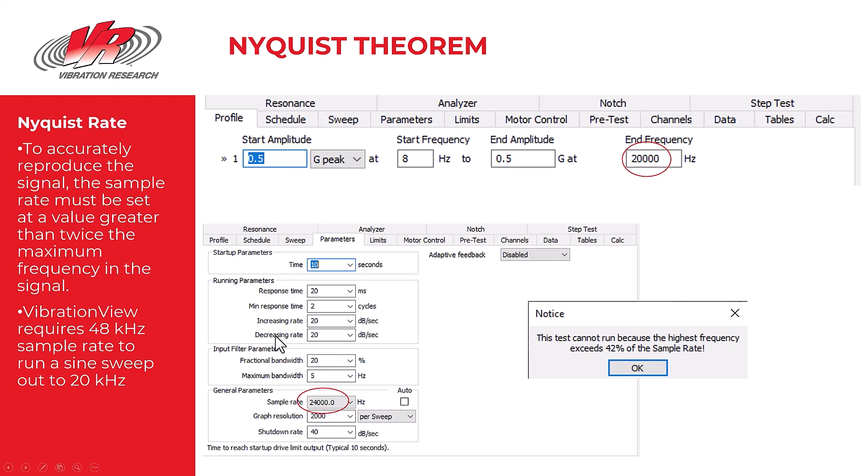I tried on the VibrationView software to pick a number lower than 40,000 samples. I picked 24,000 and this error popped up. The test cannot run because the highest frequency exceeds 42% of the sample rate.